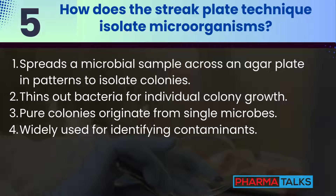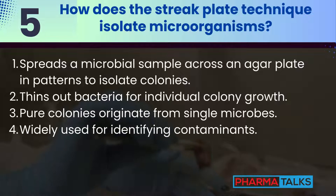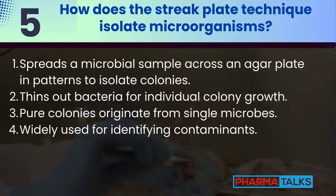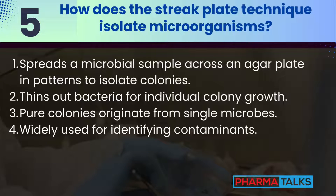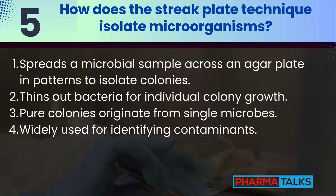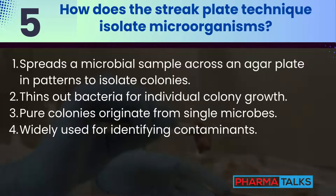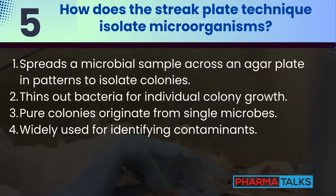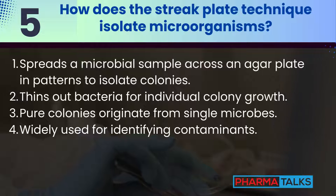How does the streak plate technique isolate microorganisms? The streak plate method spreads a microbial sample across an agar plate in a specific pattern. This thins out the bacteria, leading to isolated colonies. Each colony originates from a single microbe, making it pure for further analysis. It's widely used in identifying contaminants in pharmaceutical production.